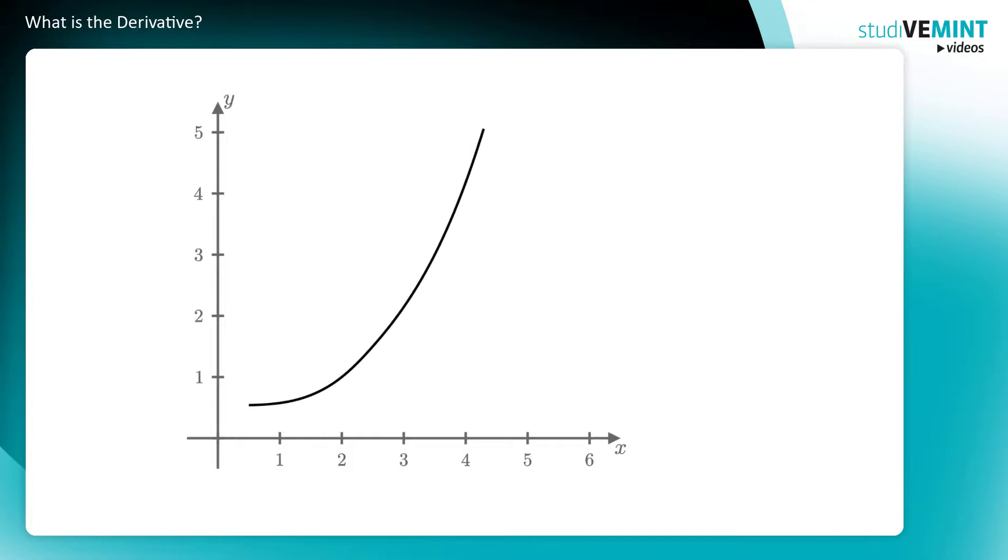Imagine you want to determine the slope of a function at a point. What does this even mean? In this graph, you would probably say that the slope in this point is smaller than the slope in that point. But how can you actually compute it?